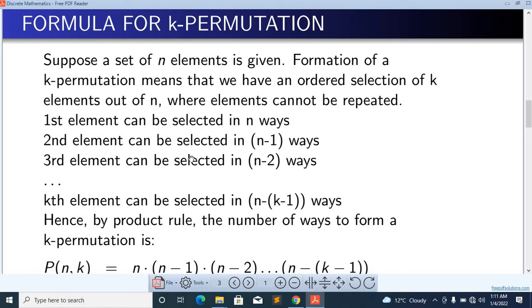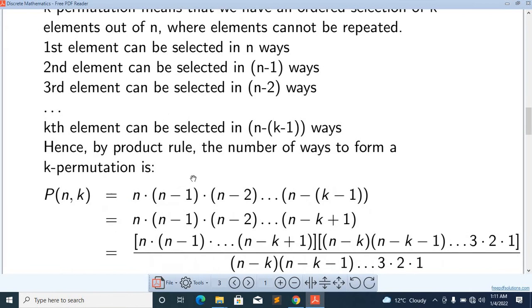The first element can be selected in N ways. The second element can be selected in N-1 ways, because elements cannot be repeated. The next in N-2 ways, and so on. Hence, by the product rule, the number of ways to form a K-Permutation is a product of these terms.